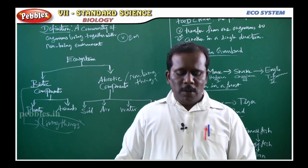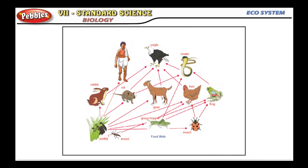Next — food web. A network of interlinked food chains is called a food web. In the visual example: from paddy, there are interlinked food chains. Grasshopper and beetles are connected; beetles are food for frog. It is interlinked — this forms a food web.